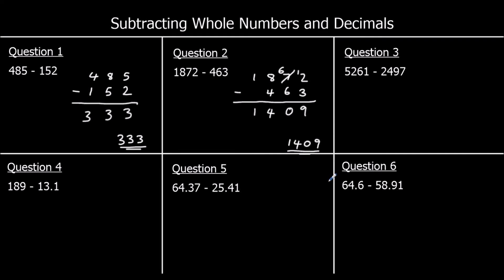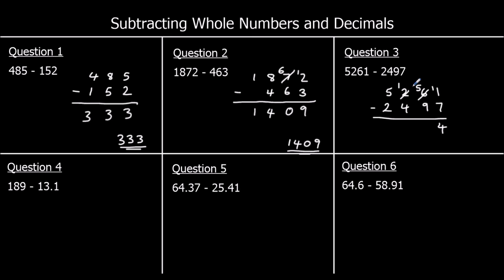Question 3: 5,261 take away 2,497. Starting with the ones: 1 take away 7, I don't want to do, so I'll steal one of the tens, and that's worth 10 in the ones. 11 take away 7 is 4. The tens: 5 take away 9, I don't want to do, so I'll steal one from the hundreds — that's worth 10 in the tens. 15 take away 9 is 6. In the hundreds: 1 take away 4, I don't want to do, so steal one of the thousands — that's worth 10 hundreds. 11 take away 4 is 7. And 4 take away 2 is 2. So the answer is 2,764.